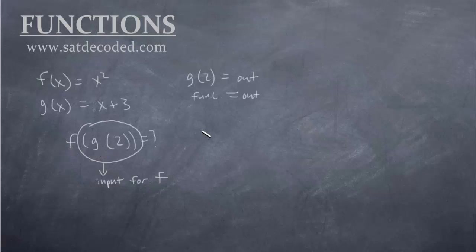But within the g(2) itself, just g(2), the 2 portion is also an input, but it's an input for g, the function of g. It is not, this 2 is not an input for f. The input for f is g(2), that whole value, okay?